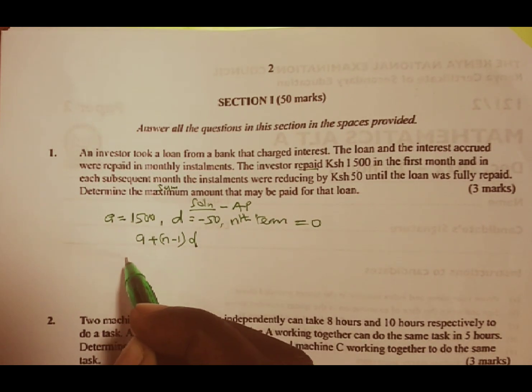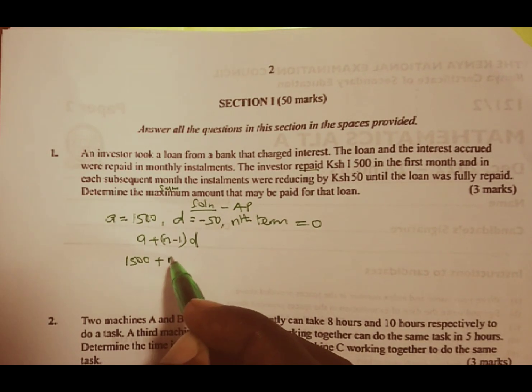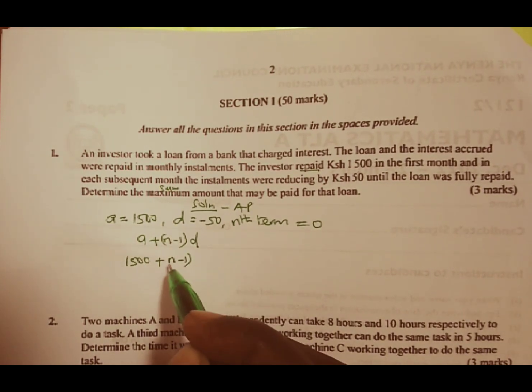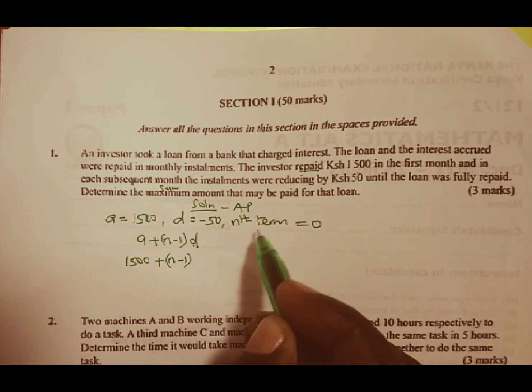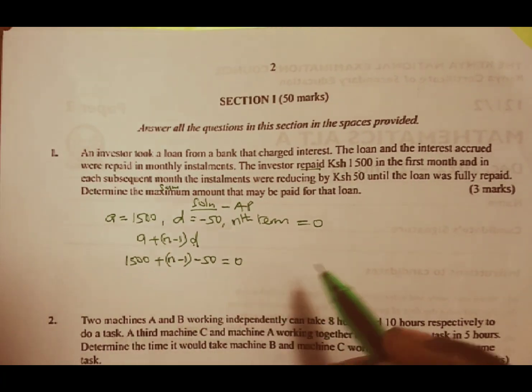Our first term has been given as 1500 plus N, which we don't have, minus 1. Then we multiply by the common difference, which is negative 50, and this equals 0.